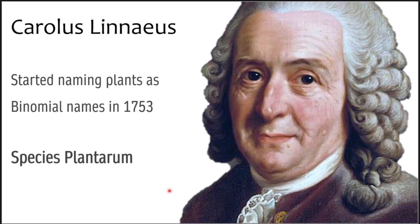However, it was not exactly the first time binomial nomenclature was used. A question may also arise: what was used before that, and how was a plant named? Usually plants were named very descriptively, and that type of naming was called polynomial or vernacular names. Naming of plants was not systematic — it was very much dependent on locality, region, language, and usage. But the credit for bringing a common system goes to Carolus Linnaeus, without any doubt.